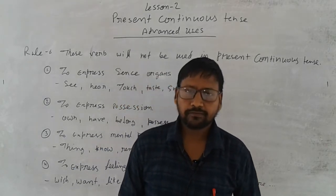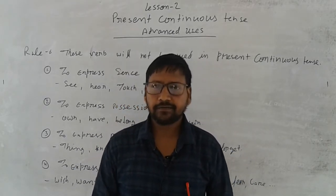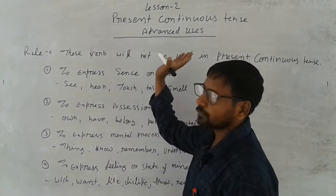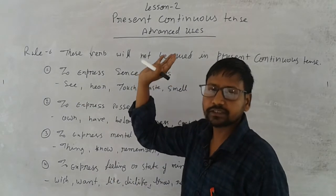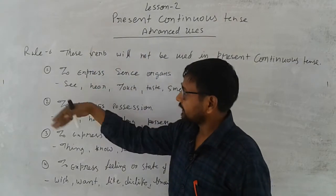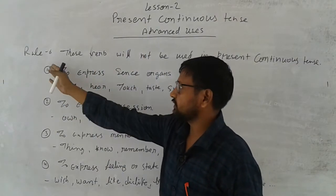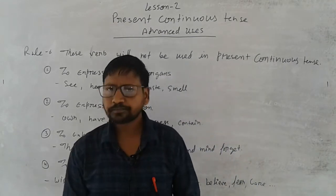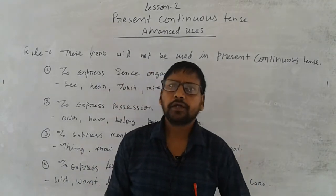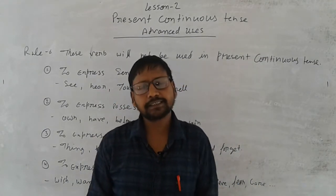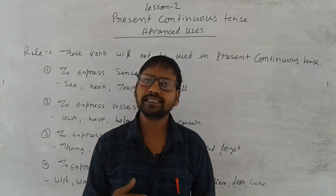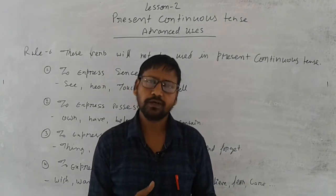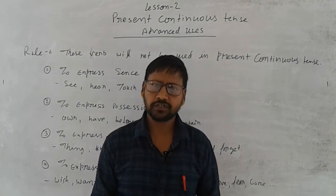Welcome back once again to online classes. We are going to complete the next topic. This topic is present continuous, lesson number 2 and next rule, which is rule number 6, which tells us exactly that if we are using sentences in present continuous, our mind tells us to use only the ING form.